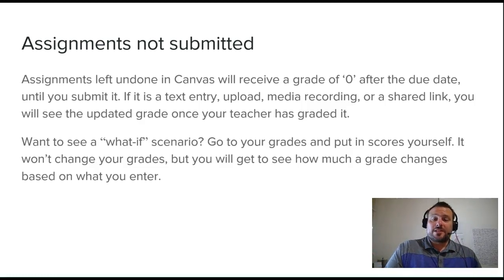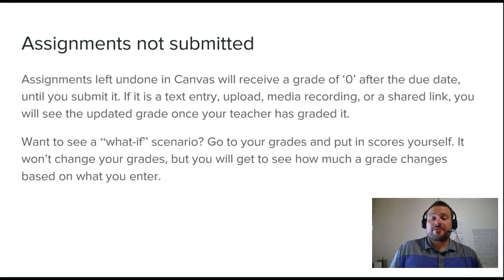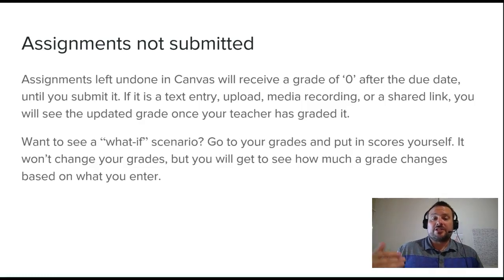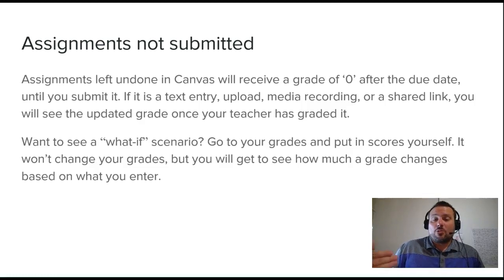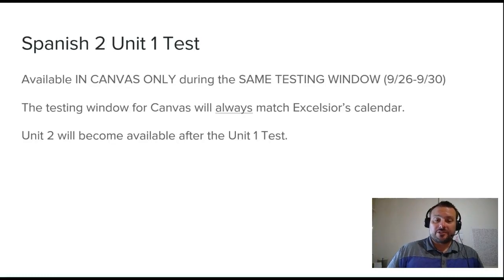Now, if it's an assignment like a text entry, some upload media recording like a voice recording, or a shared link that you submitted, you will see it once the teacher has graded it. So you may not see an update right away on those things. But this is why it's so important to make sure you get your stuff in on time. And if you want to see a what-if scenario, you can just go to Grades in Canvas on the left side. Click on Grades, and you could actually put in scores yourself to see what your grade would be. Now, it's not going to change your grade, but it will show what would happen if you had certain grades in there. So it's a very useful tool for you.